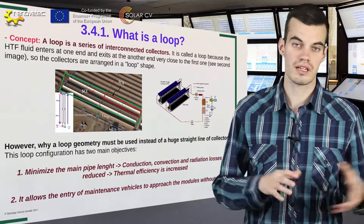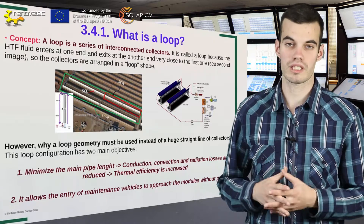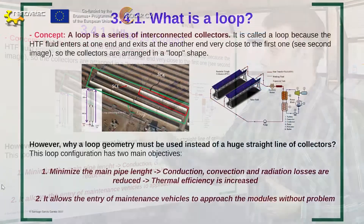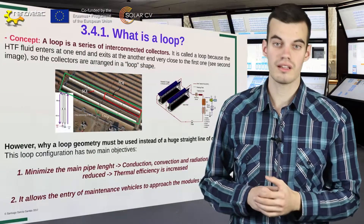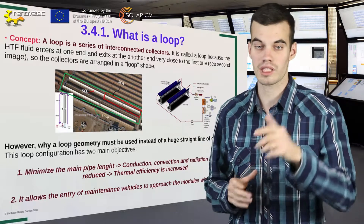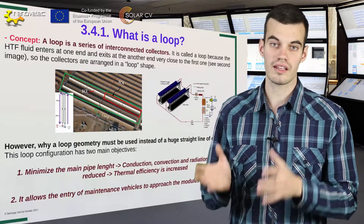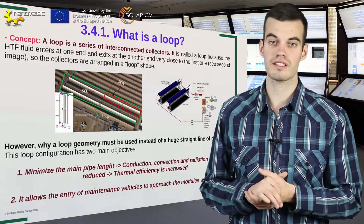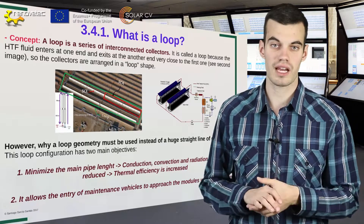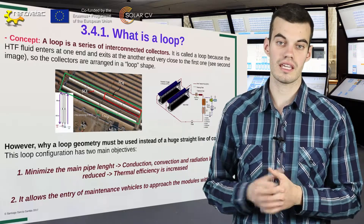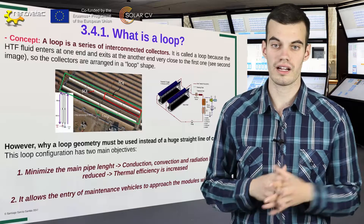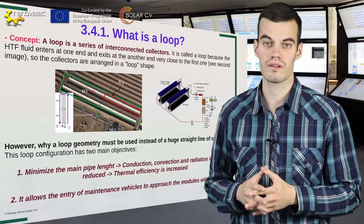The main concept at the beginning is the loop concept. What is a loop? A loop is a series of interconnected collectors. First, we have a module which is responsible to absorb this solar radiation and the reflected mirror must reflect this solar radiation into the observer tube, and this observer tube must transform this solar radiation into thermal energy. However, these modules are grouped in collectors. More or less, each collector has from 8 to 12 modules.